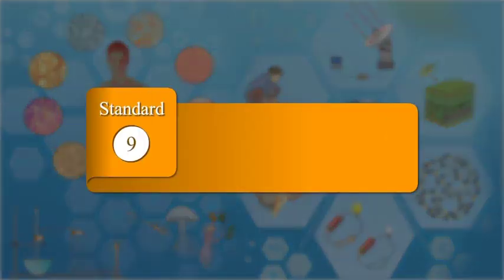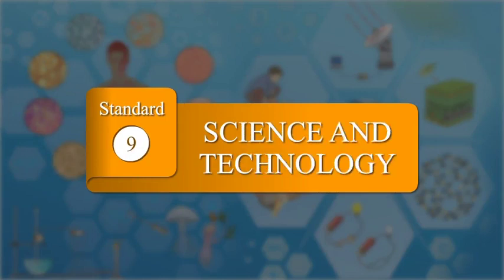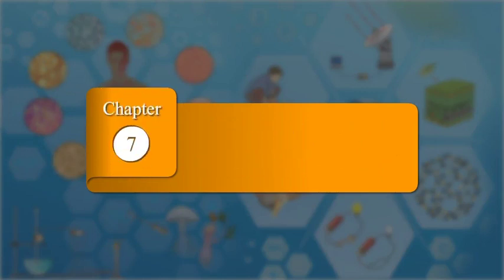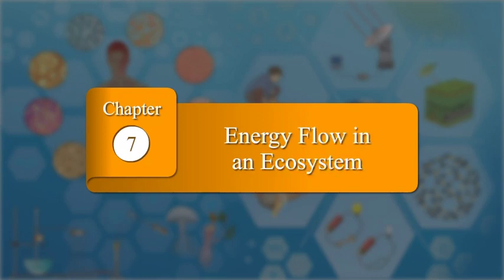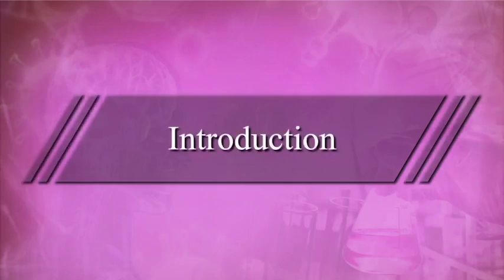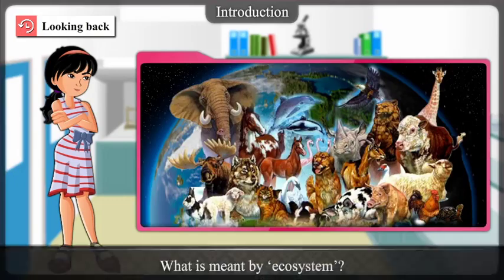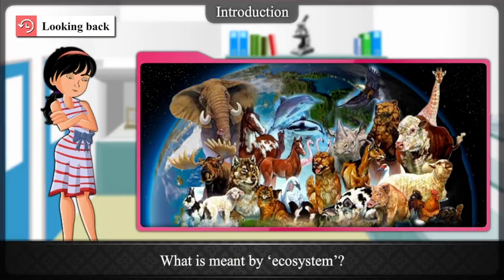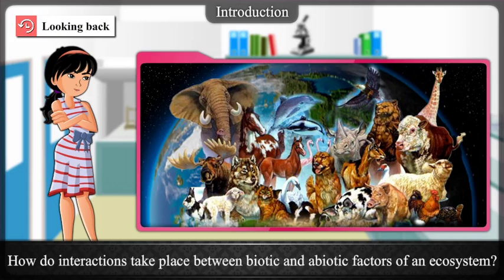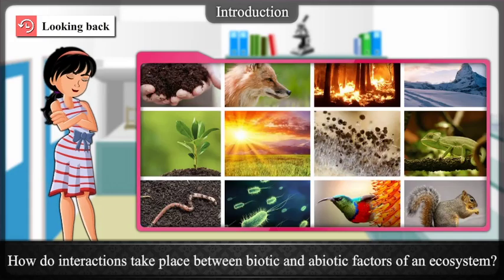Standard 9 Science and Technology, Chapter 7: Energy Flow in an Ecosystem. Introduction — Looking back: What is meant by ecosystem? Which are the different types of ecosystems? How do interactions take place between biotic and abiotic factors of an ecosystem?